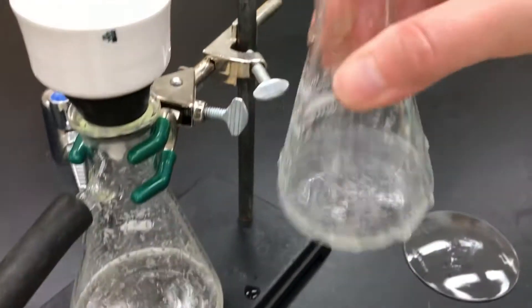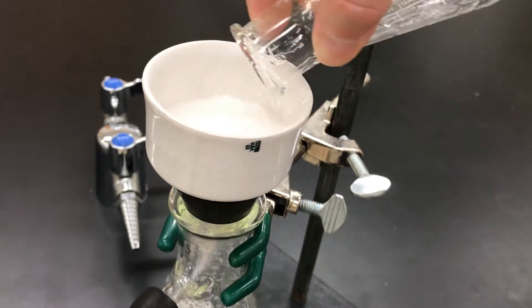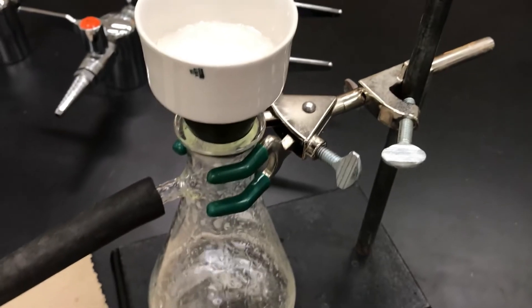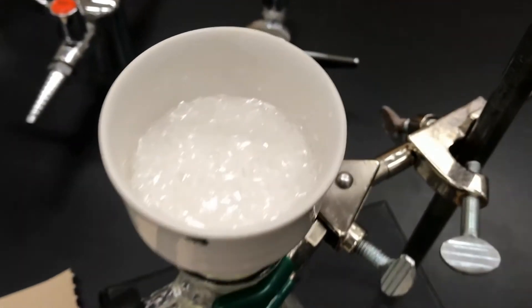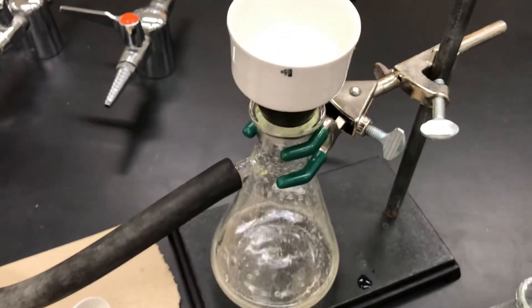And then do another swirl and dump step. There's going to be some residue that is going to stay on the flask and that's okay. Don't try to get every speck out. But here we have our beautiful crystals that I've collected.